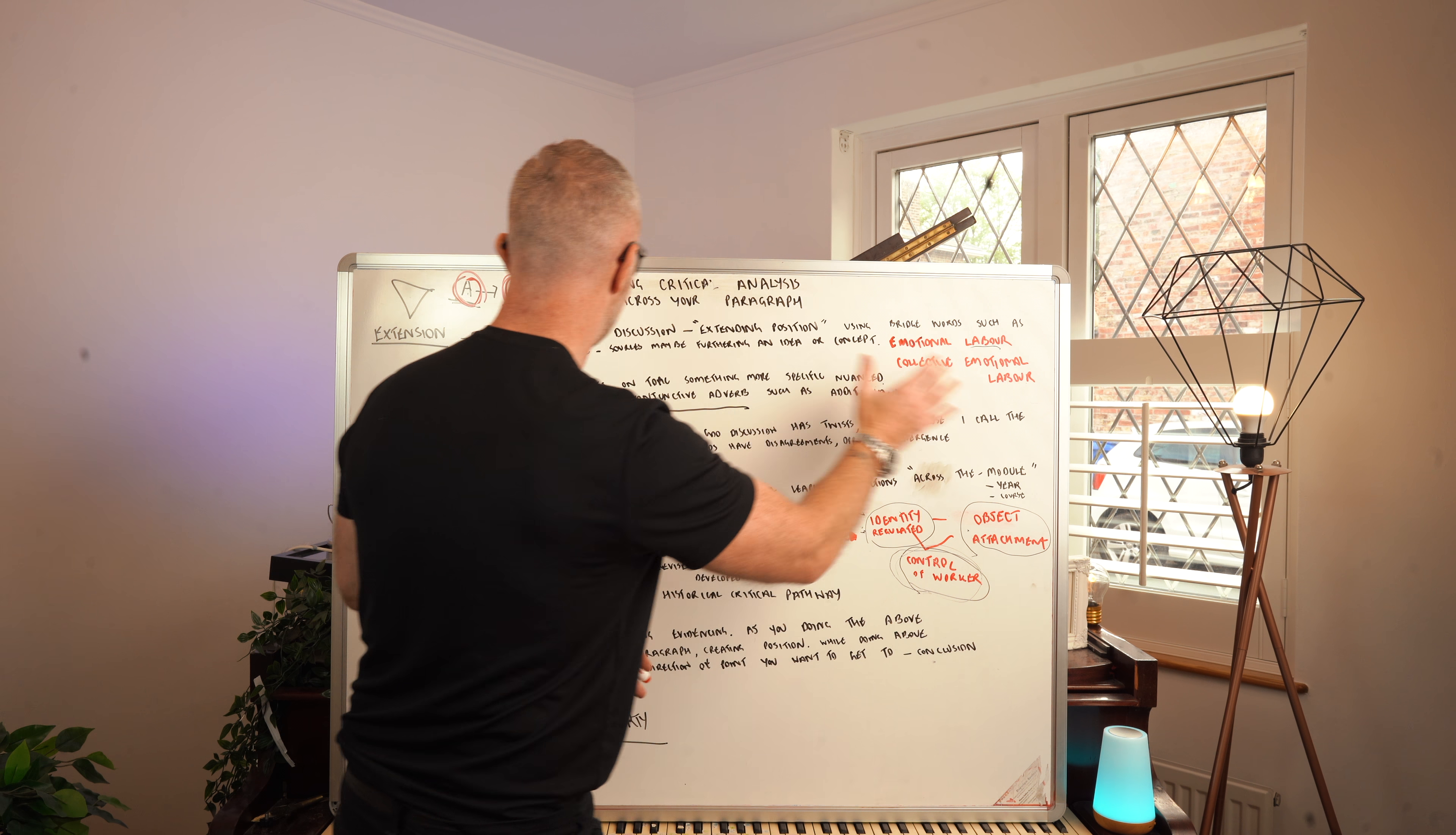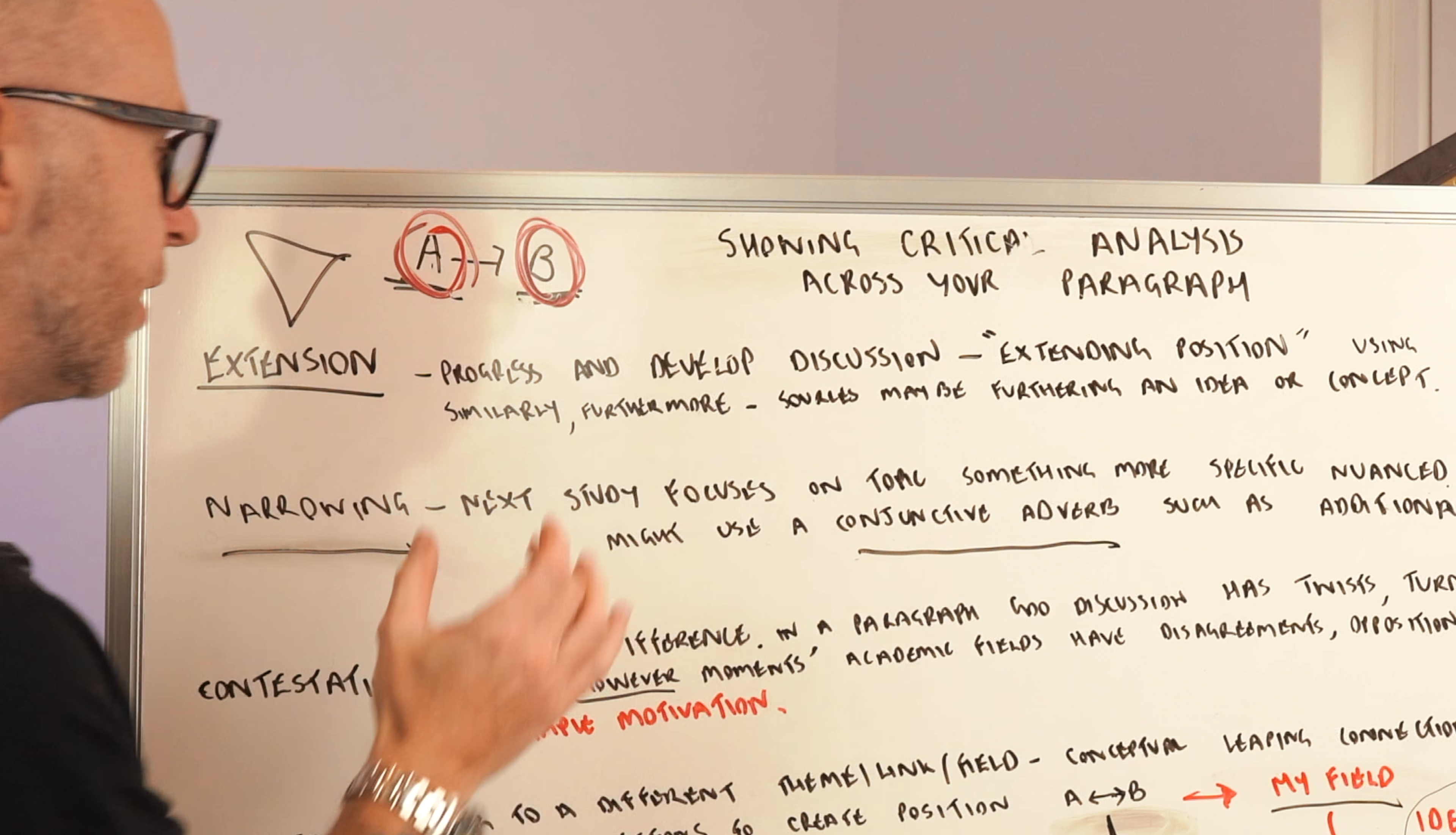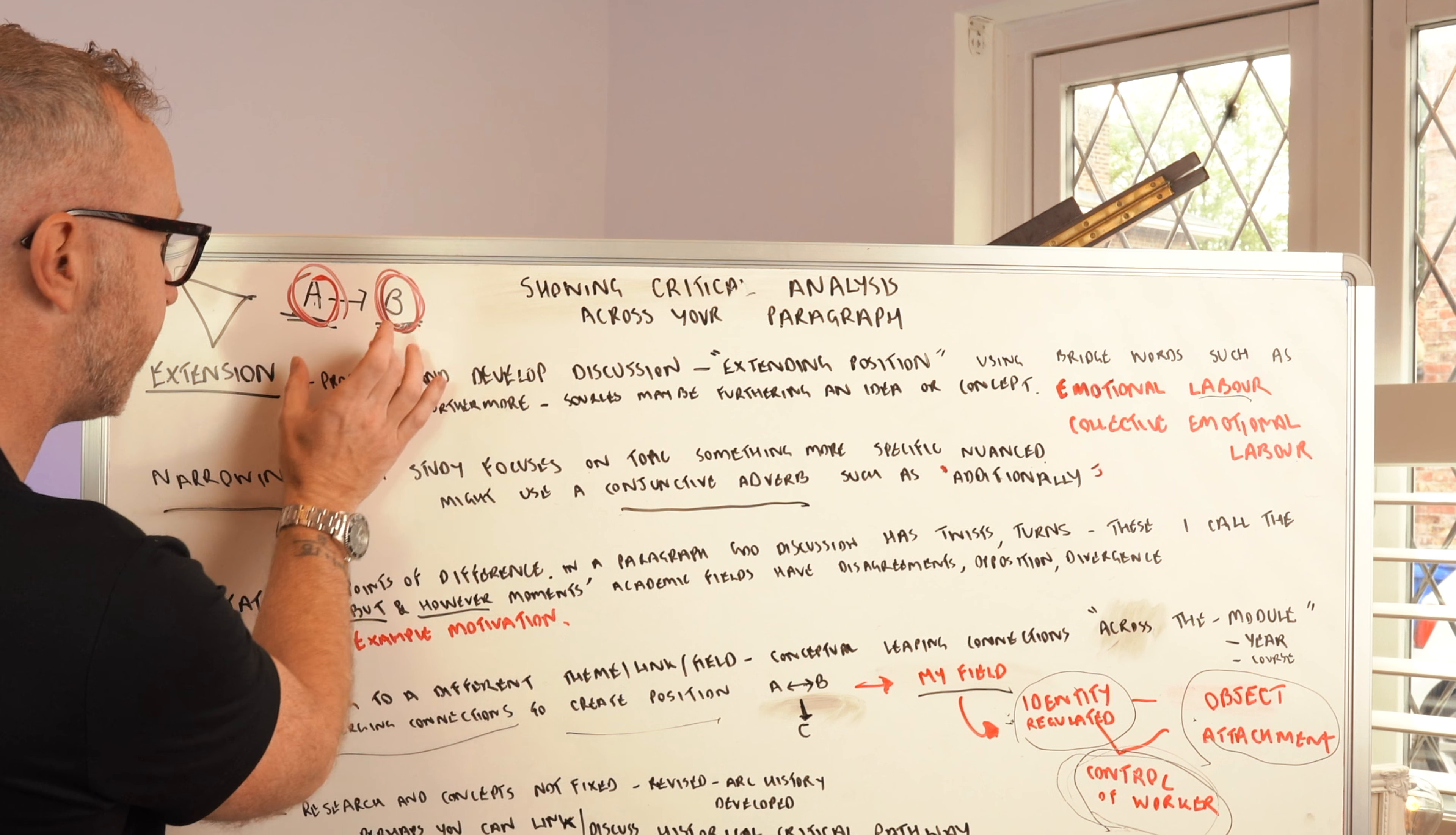Next up we've got narrowing. What we can think about here is how you find focus from one study to another. On a topic something might be more specific or more nuanced. Theorist or thinker A in the first source might be suggesting something, but thinker B might have something more specific or nuanced in their study. We might use a conjunctive adverb such as additionally. The bridge word between source A and source B might be additionally thinker B has looked at it in this more nuanced way and found this out. Importantly again, you're not just presenting the ideas of A and B but you're showing a relational connection between them.